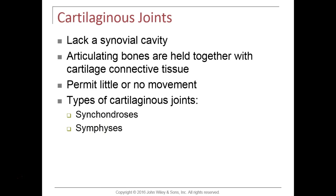Cartilaginous joints, like fibrous joints, do not contain a synovial cavity or joint cavity. The adjoining bones are held together by a cartilaginous pad — cartilage connective tissue. They may be amphiarthrotic or synarthrotic joints depending on the example. We'll cover synchondroses, which are held together by a pad of hyaline cartilage, and symphyses, where the adjoining bones are held together by a pad of fibrocartilage.